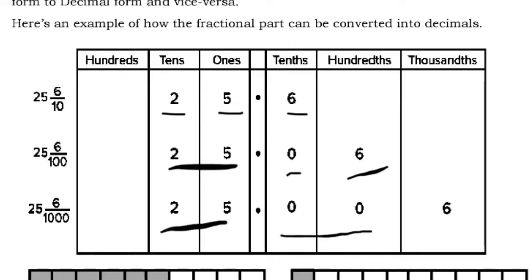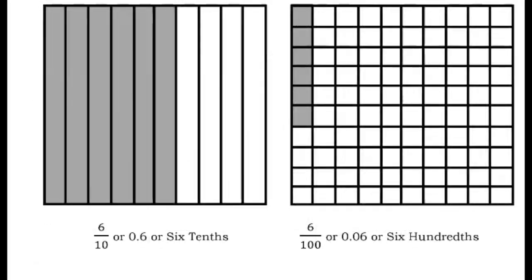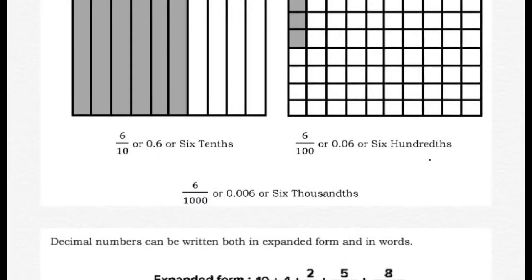Then 25 and 6 over 1000 is 25.006. In the table, 6 over 10 is the same as shading 6 parts of 10 rectangles, giving 0.6 or six tenths. Then 6 over 100 means shading 6 parts of 100 squares, giving 0.06 or six hundredths. Then 6 over 1000 is 0.006, read as six thousandths.